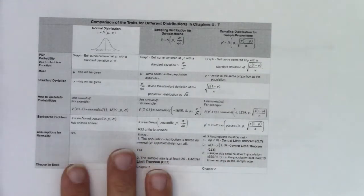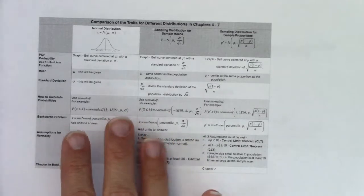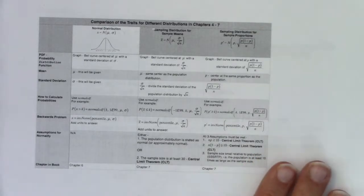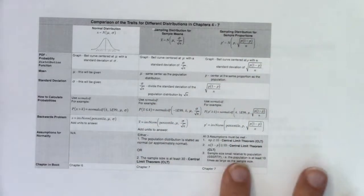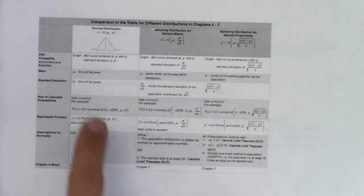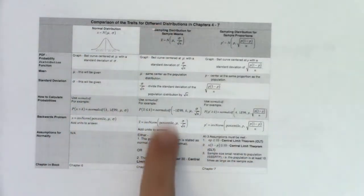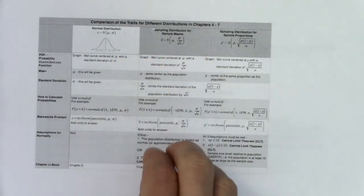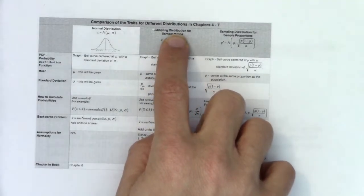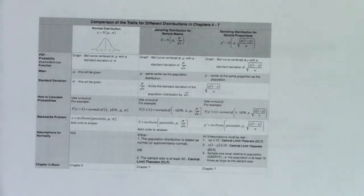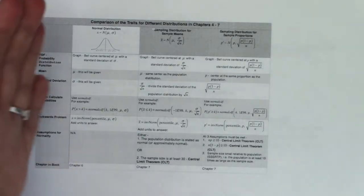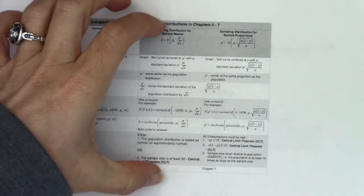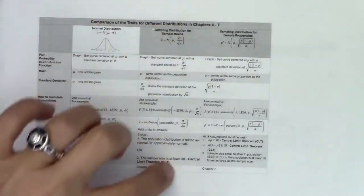We spent the last few chapters — Chapters 4, 5, 6, and 7 — all with numerical data. We're going to finally go back to categorical data and look at some proportions, but that won't be until the end of this chapter. We are taking Chapter 6 problems and bumping them up to something called sampling distributions. We're going to take a graph and make new graphs — those new graphs are called sampling distributions, because a distribution is a fancy word for graph. With those new graphs come new rules.